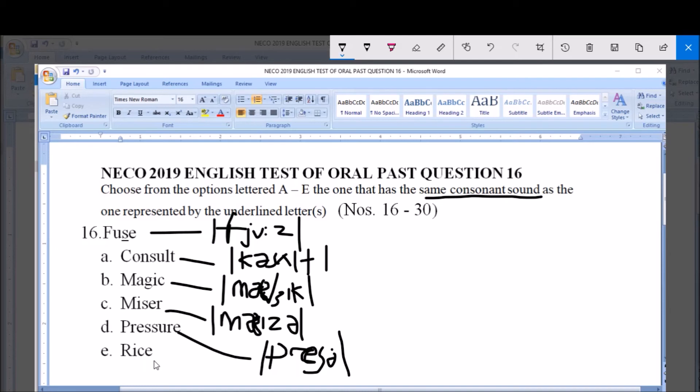Option E is pronounced as 'Rice' - /raɪs/.